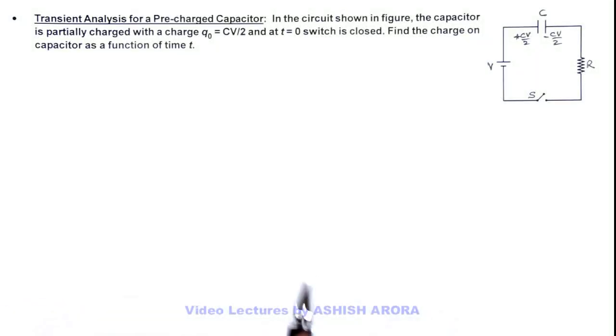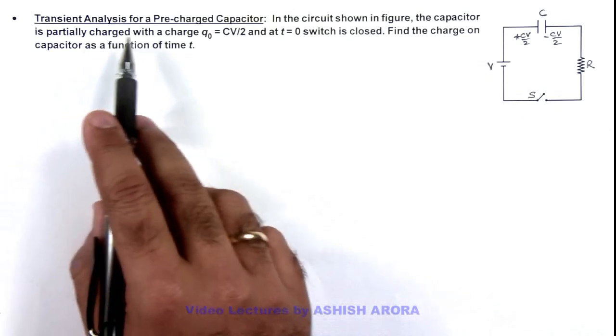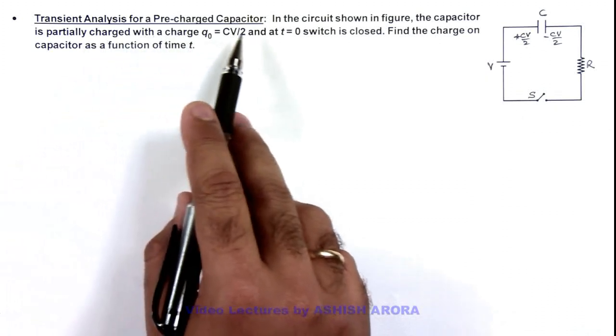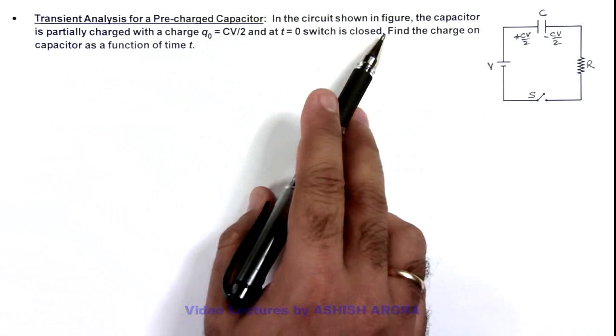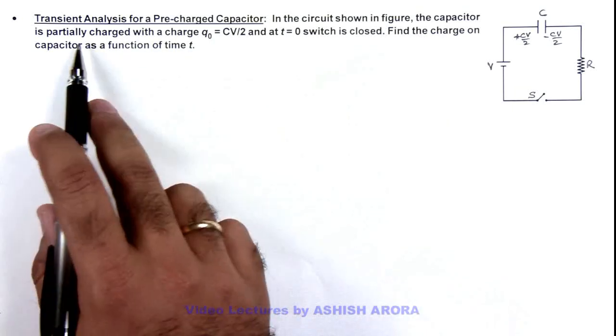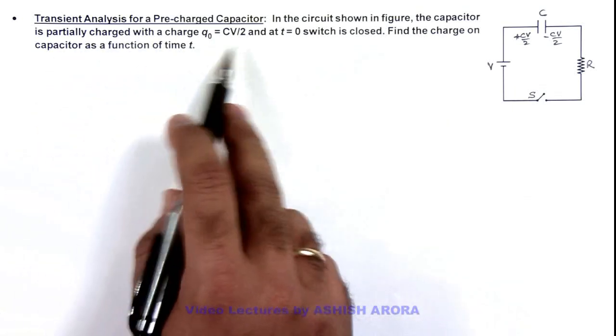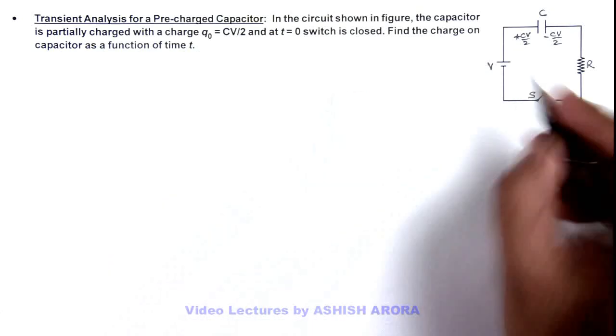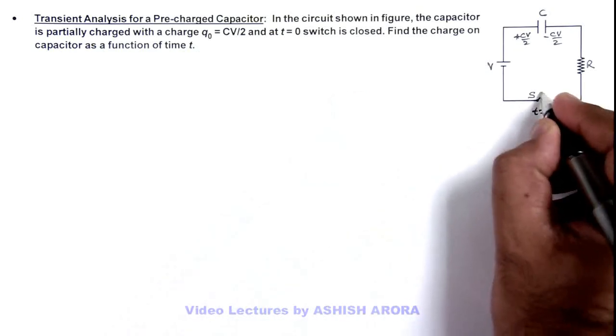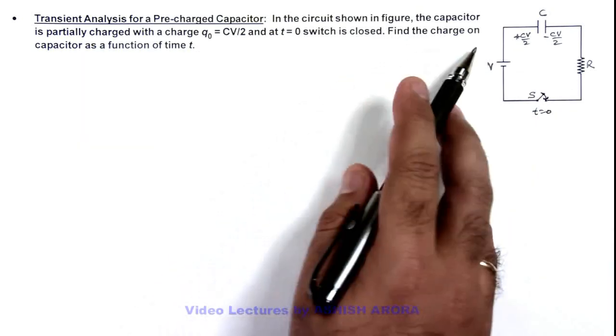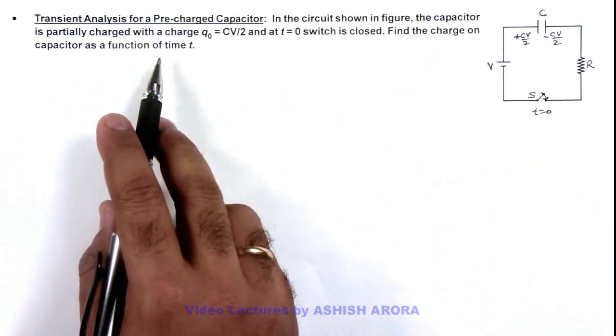In this illustration, we'll discuss the transient analysis of a pre-charged capacitor. In the circuit shown in figure, the capacitor is partially charged with a charge CV/2, and at t=0 this switch is closed. We are required to find the charge on capacitor as a function of time.